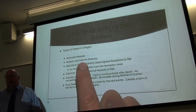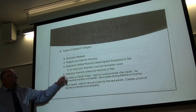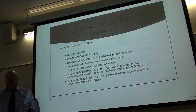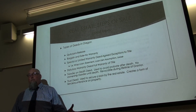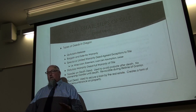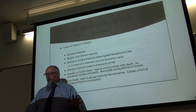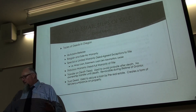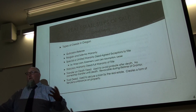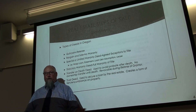A bargain and sale deed is a very common form of deed where you're transferring ownership but not making any warranties or guarantees about the extent of your ownership. It's different from a quit claim deed in that you are saying you are the owner, but beyond that you're not guaranteeing title or anything else.